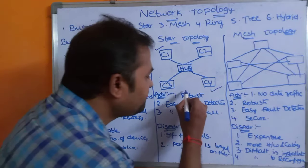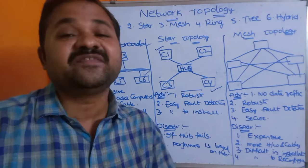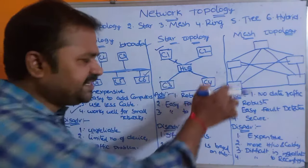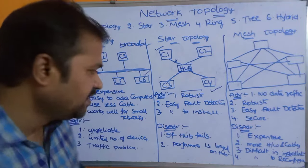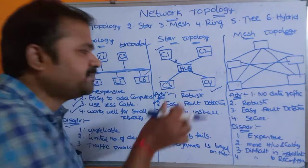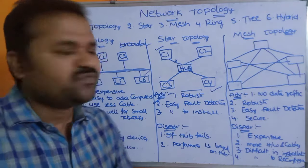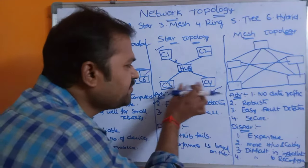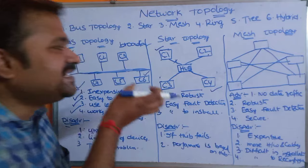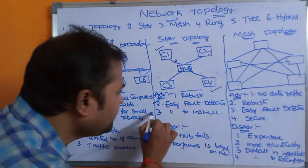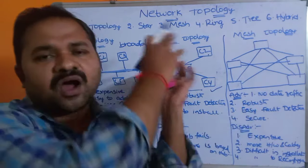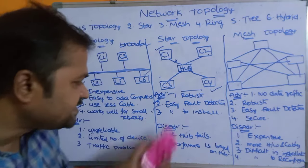The advantages of star topology: first, it is robust — if one link fails, the remaining links continue to work and the network is unaffected. Second, easy fault detection — if there is a problem with C1, neighboring computers like C2 or C3 can detect it easily. Third, it is easy to install because all computers simply connect to one central hub.